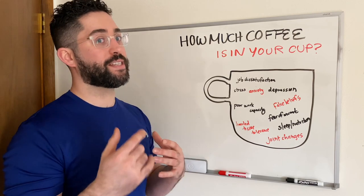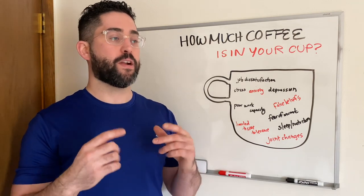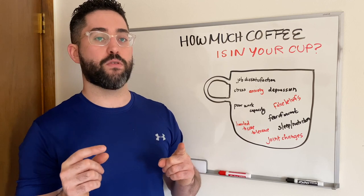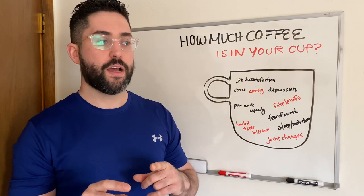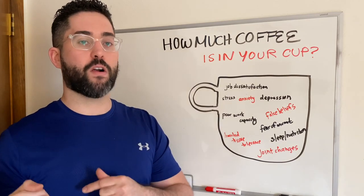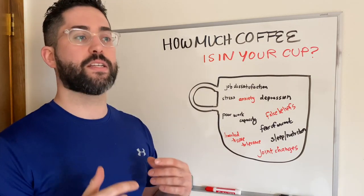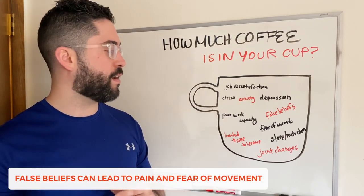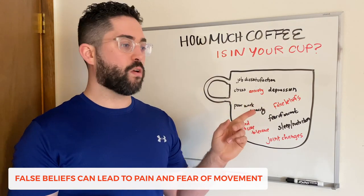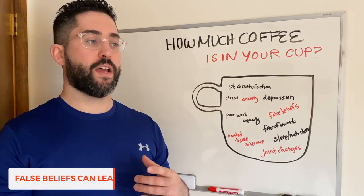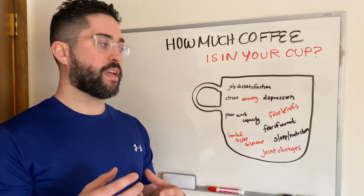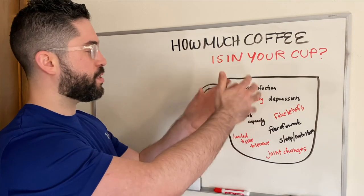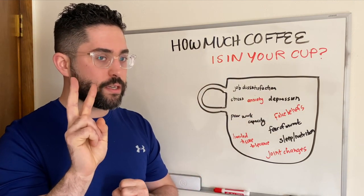For example, if you have one-sided low back pain right on the SI joint and you have the false belief that the SI joint can go in and out, it can lead to you being afraid to move and load that area, keeping your brain hyper-aware of it. We know that hyper-awareness can contribute to chronic pain. False beliefs can then lead to fear of movement — otherwise known as kinesiophobia — which keeps the area sensitized and contributes to the coffee in your cup.